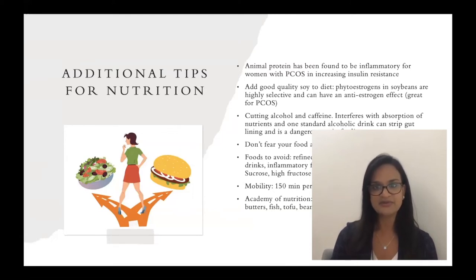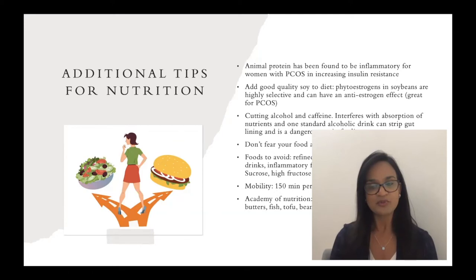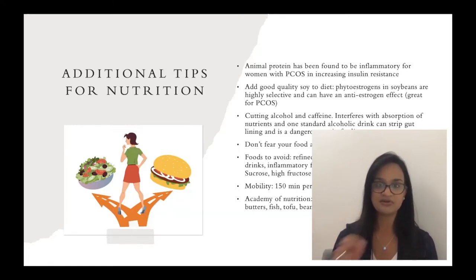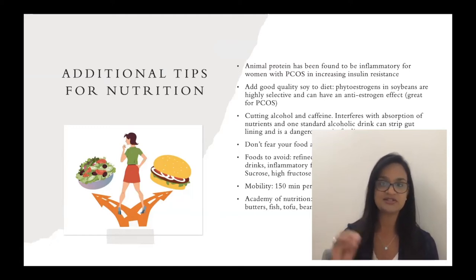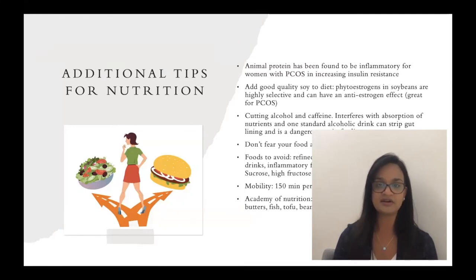Foods to avoid: refined carbs, sugary snacks and drinks, inflammatory foods, sucrose, high fructose corn syrup, and dextrose. When I have a consultation with a PCOS patient, I go through every single thing in their fridge, pantry, and even their Uber Eats account. We go through things like packaged coffee products that say zero sugar on the label and look at the fine print, because a lot of this is just awareness and education. Hooking up your PCOS patient with dietitians and nutritionists is even further help. 150 minutes per week of exercise is usually recommended for PCOS. Per the Academy of Nutrition, protein at all meals and snacks — nut butters, fish, tofu, beans, lentils, and low fat dairy are also helpful.